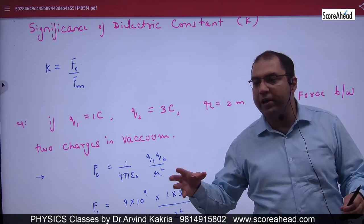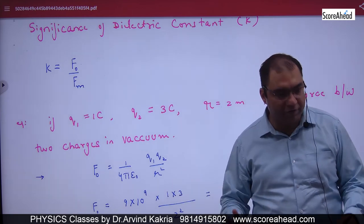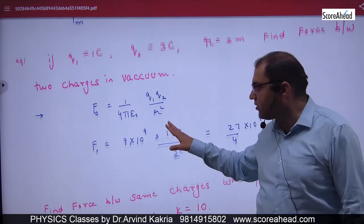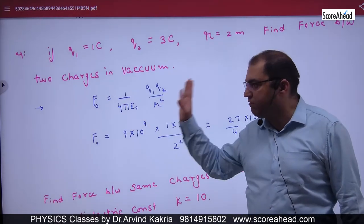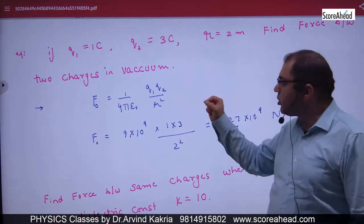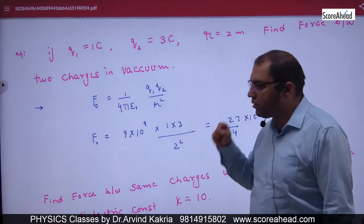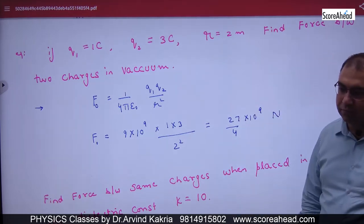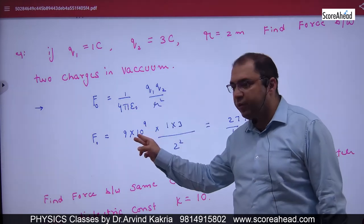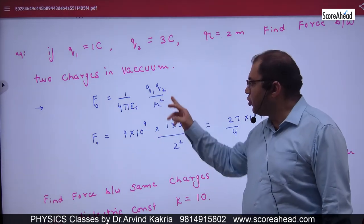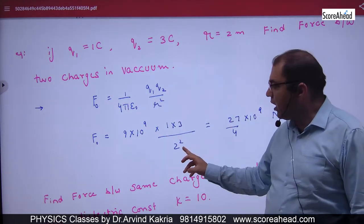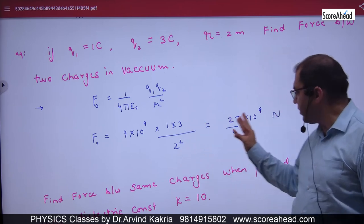Since the charges are in vacuum, you apply the formula F = (9 × 10⁹) × Q1 × Q2 / R². Substituting Q1 = 1, Q2 = 3, R = 2, you get F = 9 × 10⁹ × 1 × 3 / 4, which gives 27/4 × 10⁹ N as the force in vacuum.